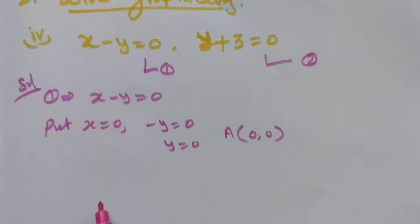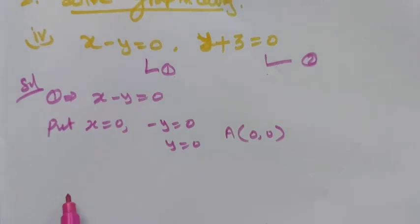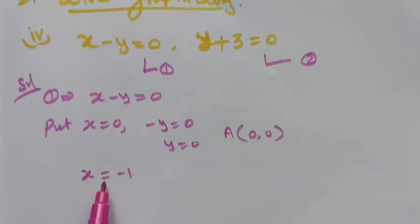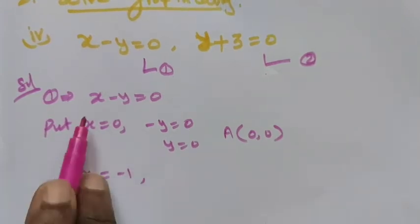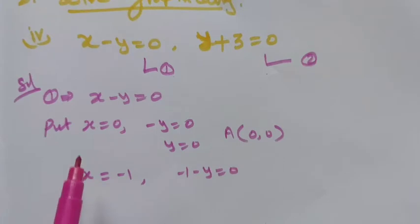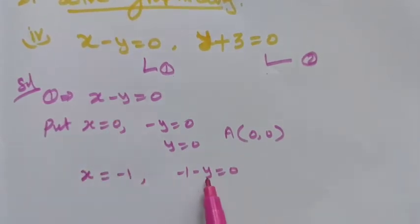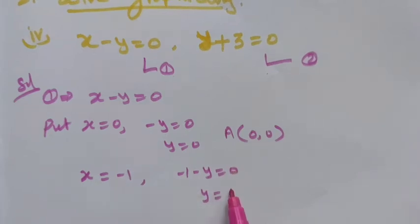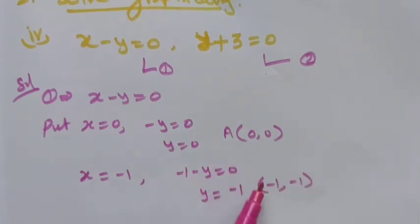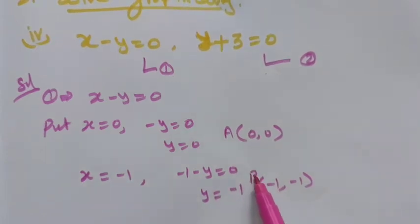Since both substitutions give the origin, we use another method. Let x equal to minus 1. Substituting: minus 1 minus y equal to 0, so y equal to minus 1. The plotting point is (minus 1, minus 1). We need two points to draw a straight line, so our two ordered pairs are point A: (0, 0) and point B: (minus 1, minus 1).